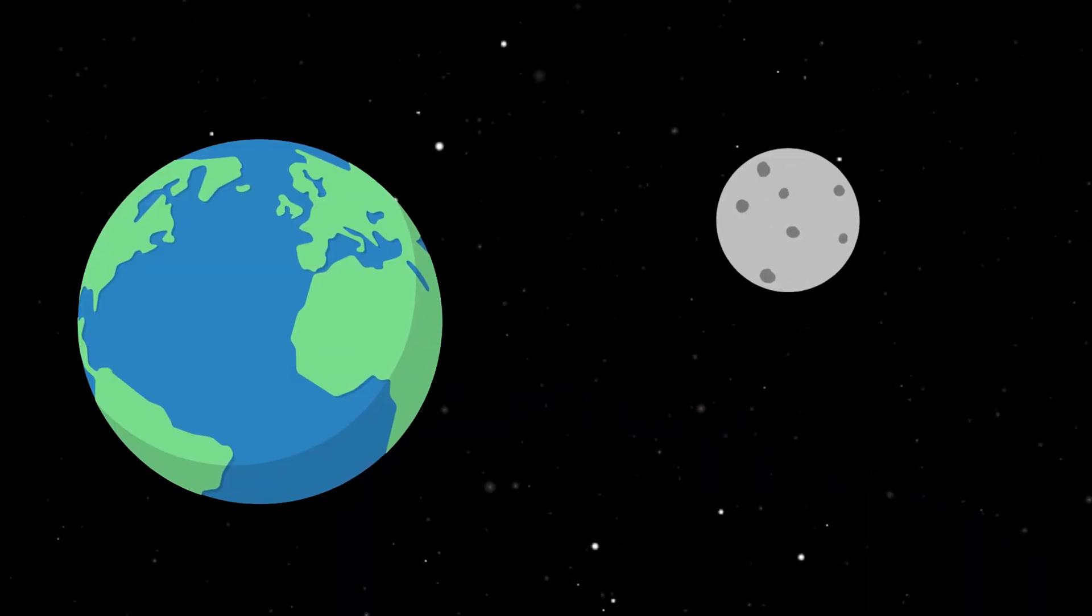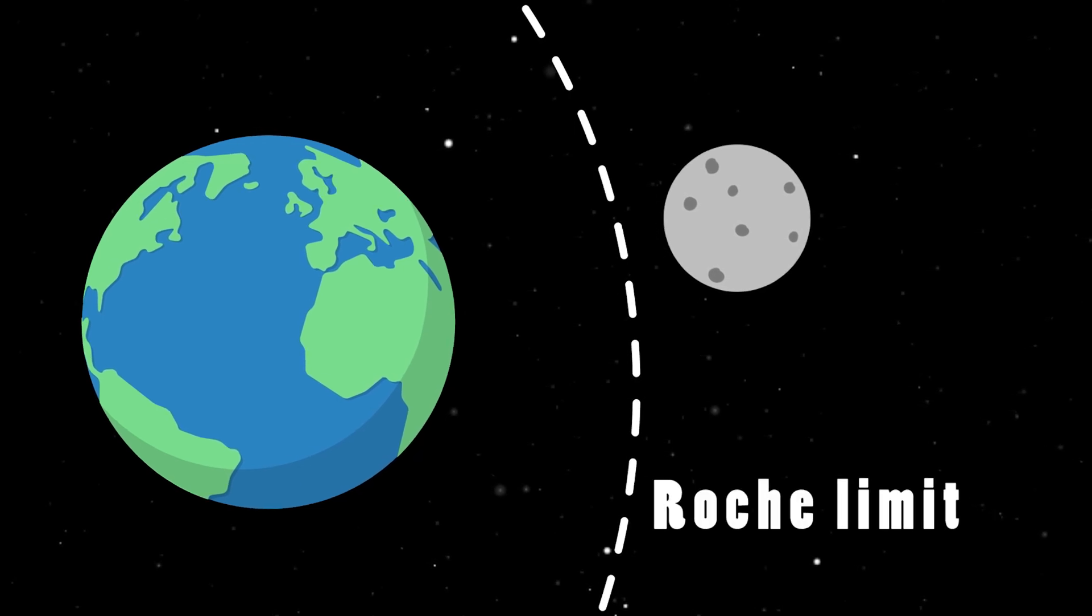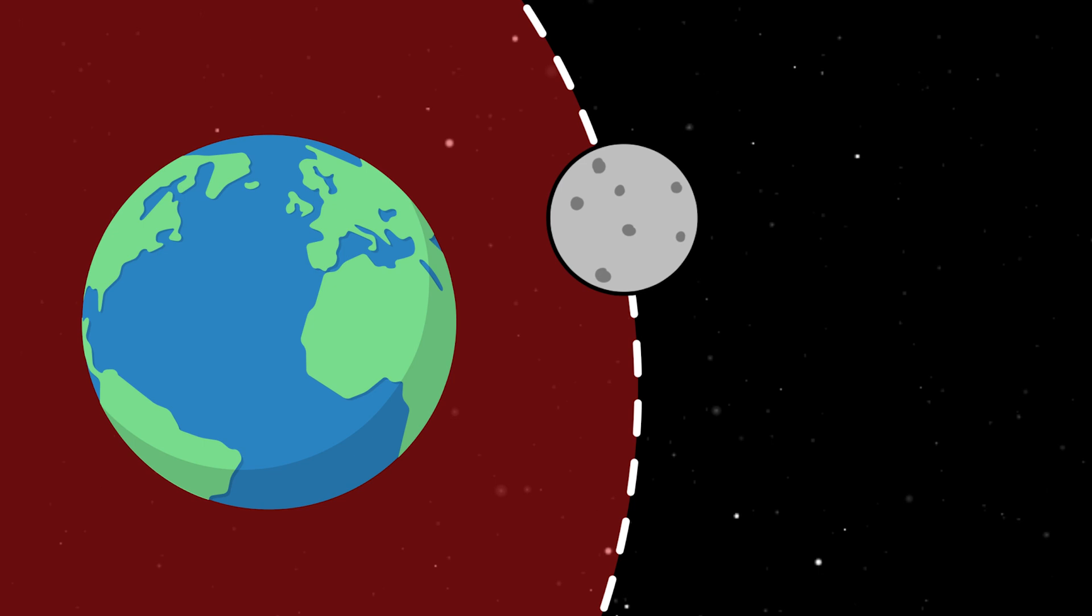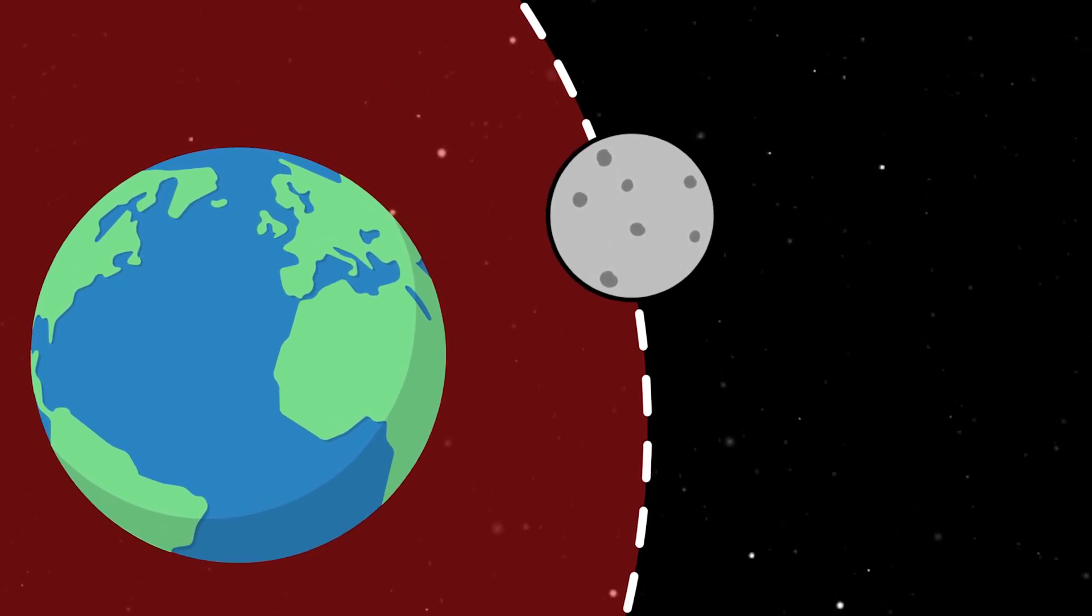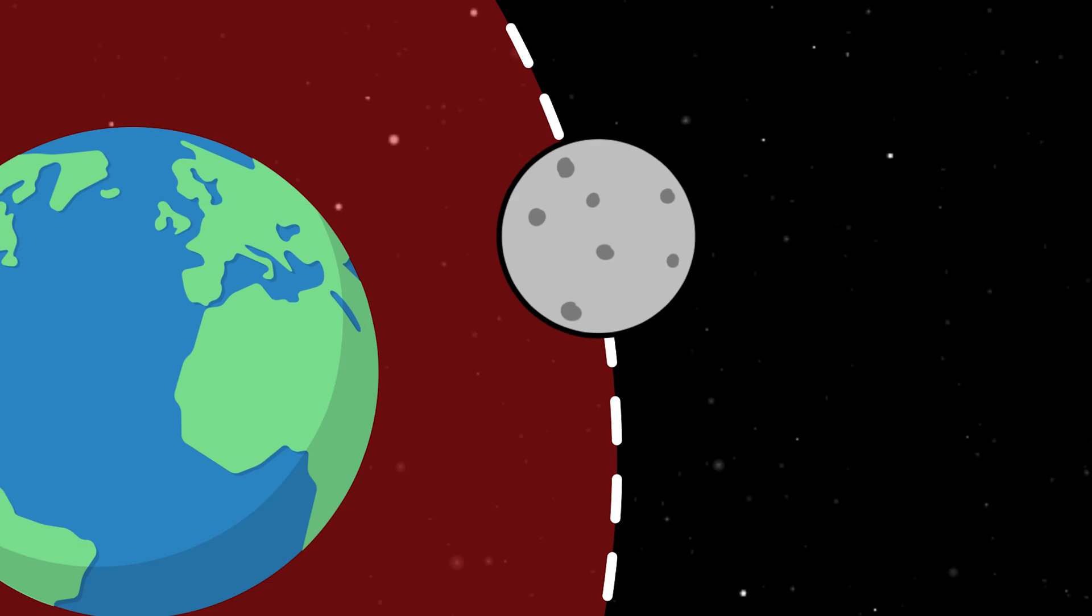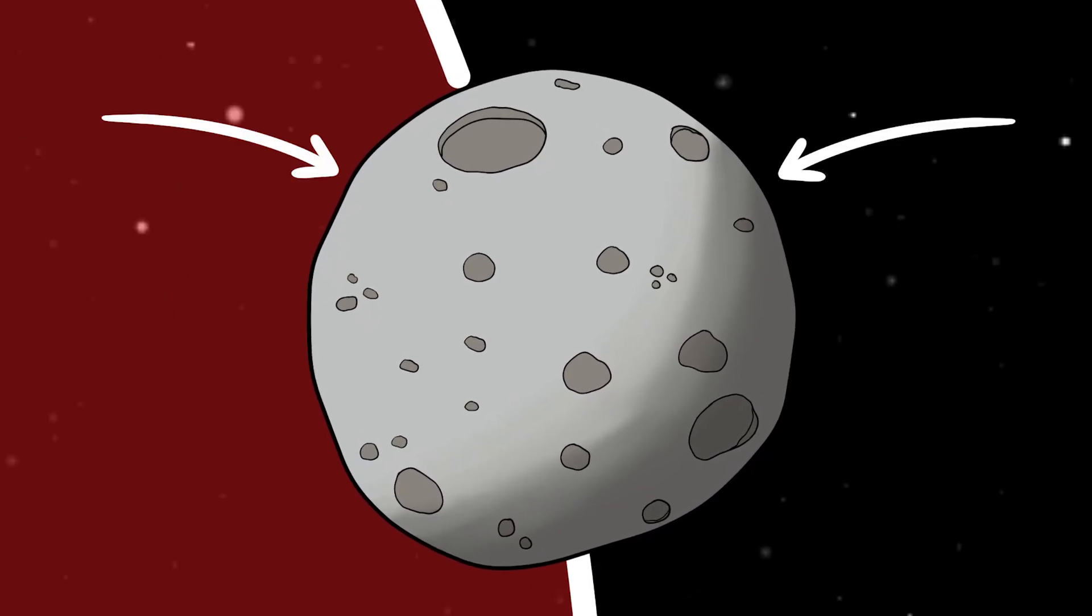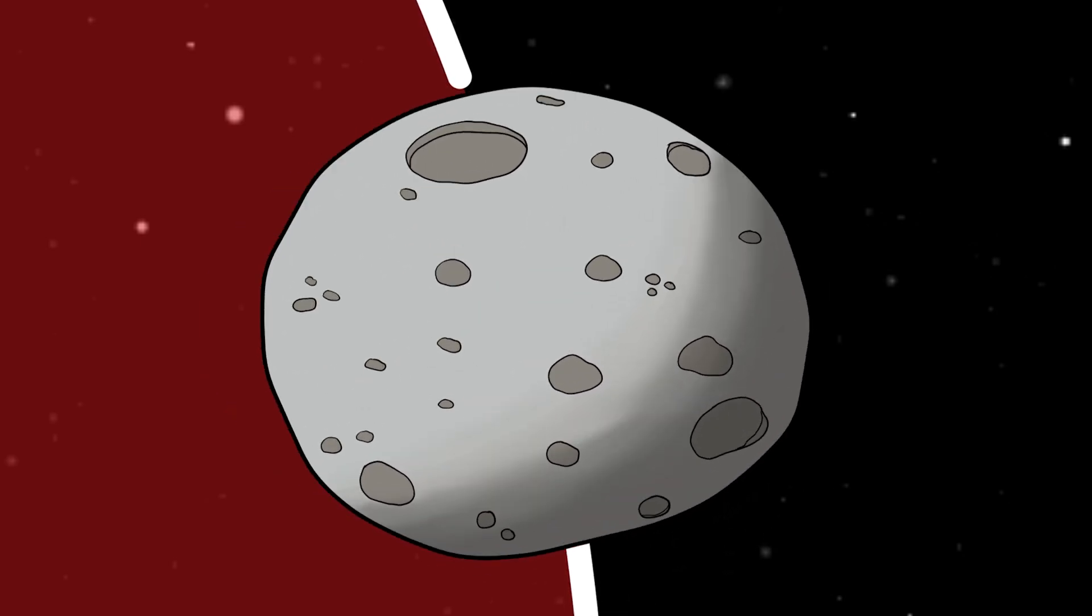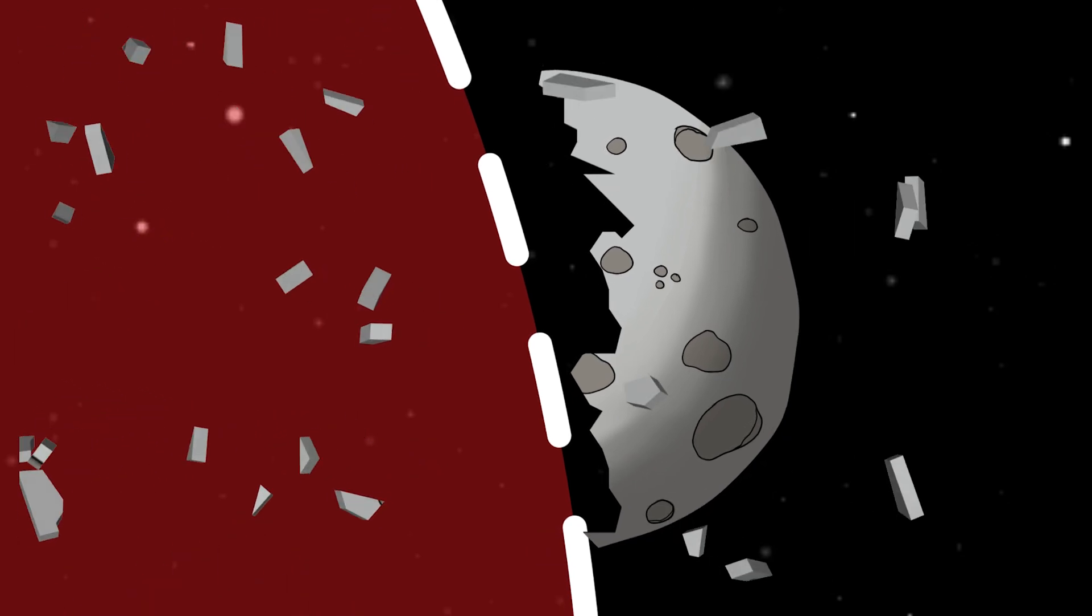Now the real fun begins. Because eventually it will cross this invisible line called the Roche Limit. Every planet has one, and once the moon crosses our Roche Limit, it enters Earth's zone where gravity starts to do really mean things. And here's what happens. Earth's gravity starts pulling way harder on the side of the moon that's closer to us than on the far side. These so-called tidal forces stretch and squeeze the moon until our chunky space body can't hold itself together anymore and gets shredded into countless pieces.